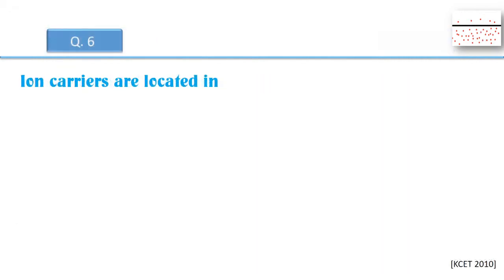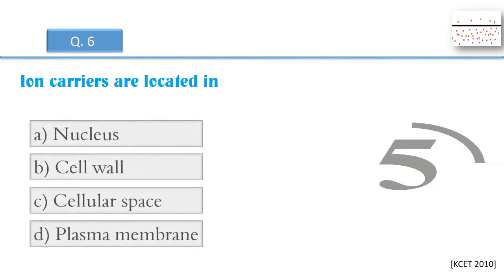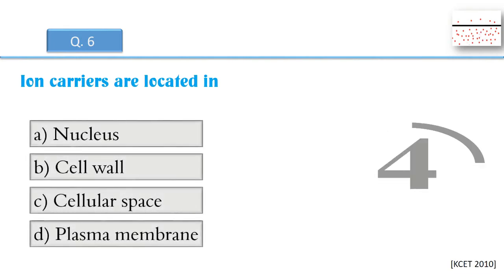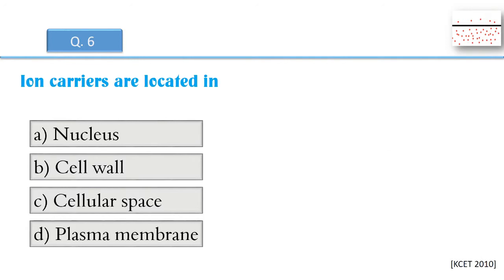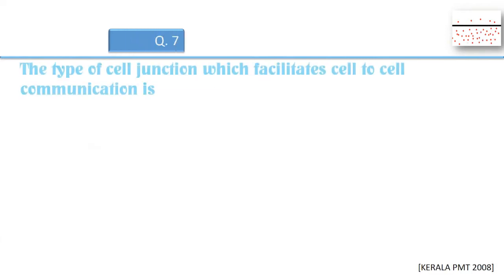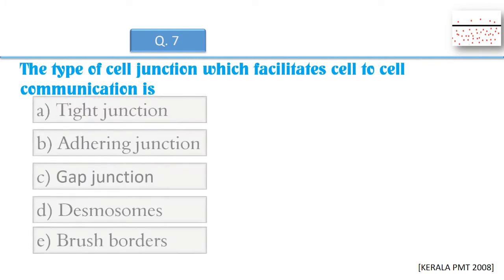Ion carriers are located in? The type of cell junction which facilitates cell-to-cell communication is?